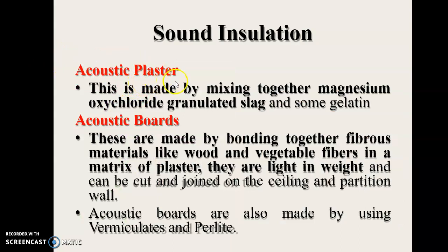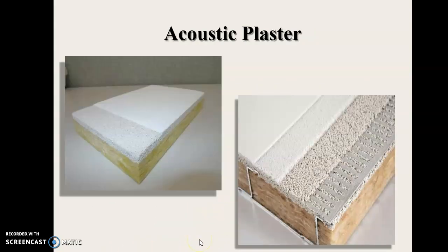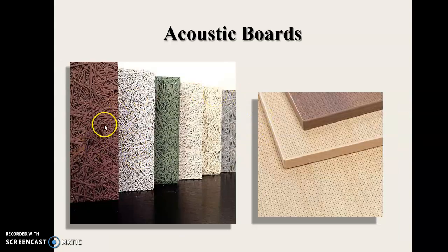Acoustic plaster is made by mixing together magnesium oxychloride, granulated slag and some gelatin. Acoustic boards are made by bonding together fibrous materials like wood and vegetable fibers in a matrix of plaster; they are light in weight and can be cut and joined on any ceiling and partition wall. Acoustic boards are also made using vermiculite and furlite.